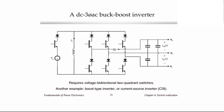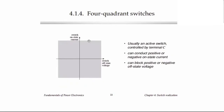The reason we need voltage bidirectional switches is that these switches have to block the output line voltages, and since the output voltages are AC they have to block either polarity of voltage. On the other hand, if power only flows in one direction then the inductor current is always of one polarity, and that current is what the switches have to conduct. So a unidirectional current flow type switch is appropriate in that case.